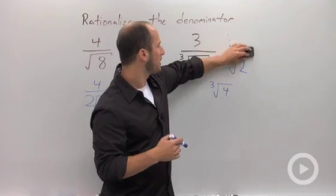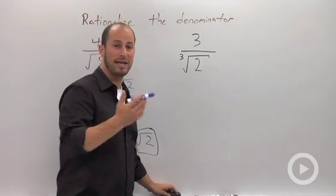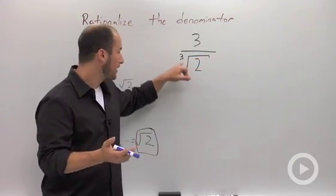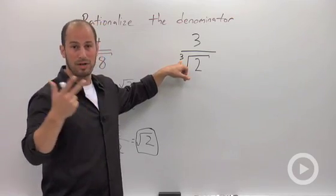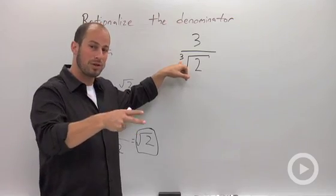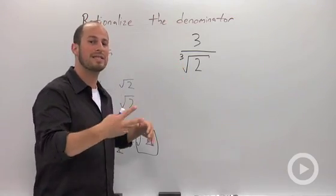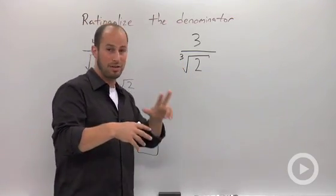So what you really need to think about is how many of a term do you need in order to get it out of a cube root. In order to get something out of a cube root, you need 3 of them, right? The cube root of 2 cubed is 2. The cube root of 8 is 2. So in order to get something out of a cube root, you need 3 items.